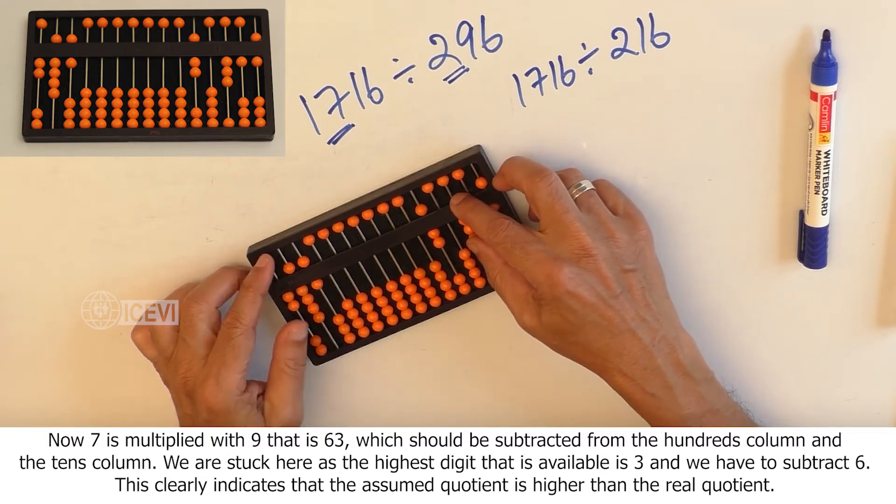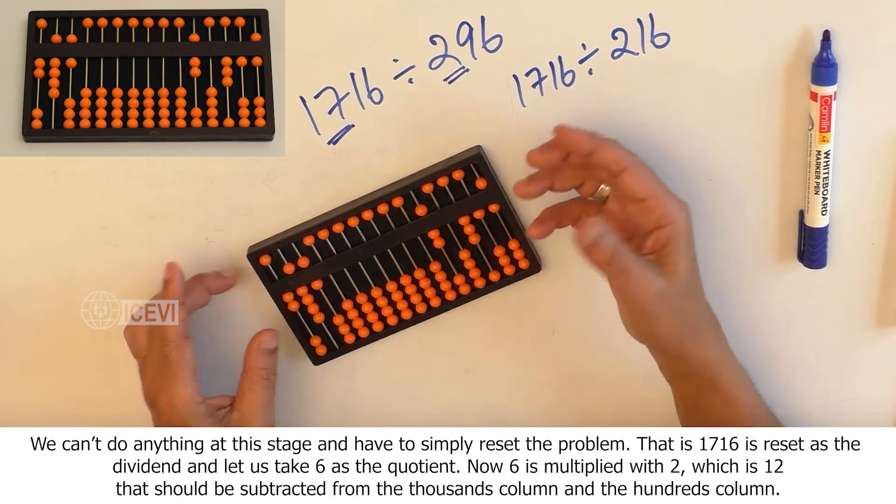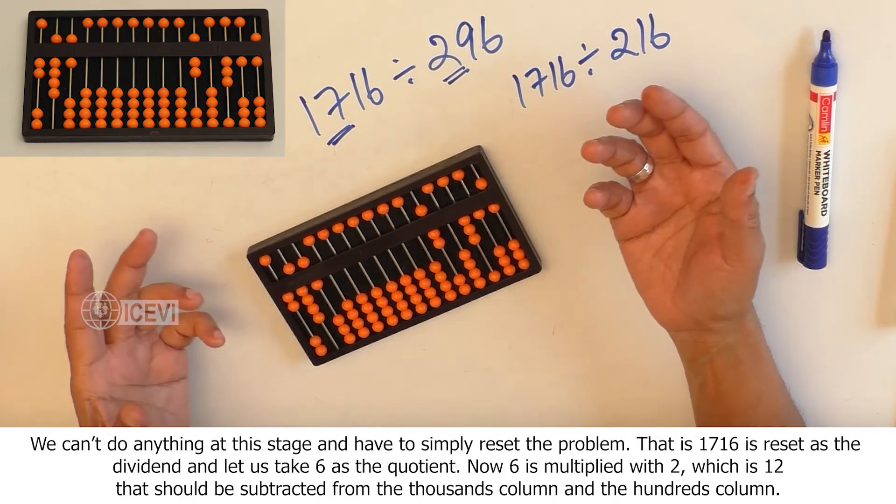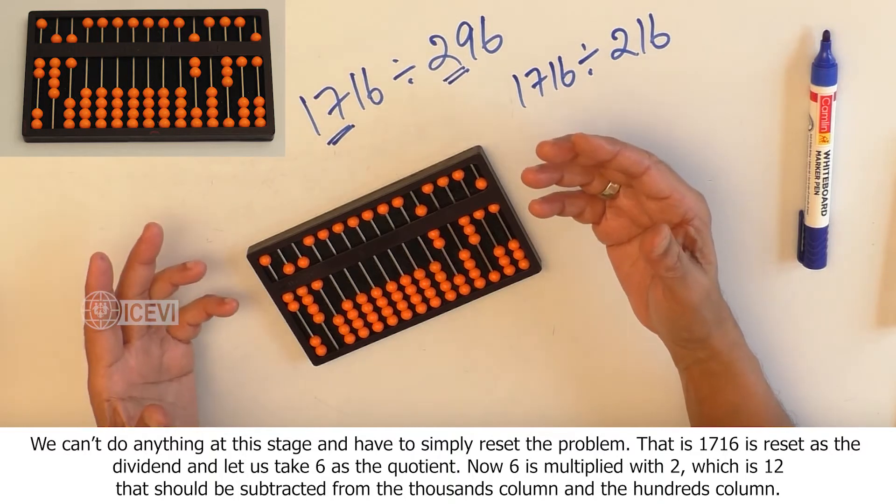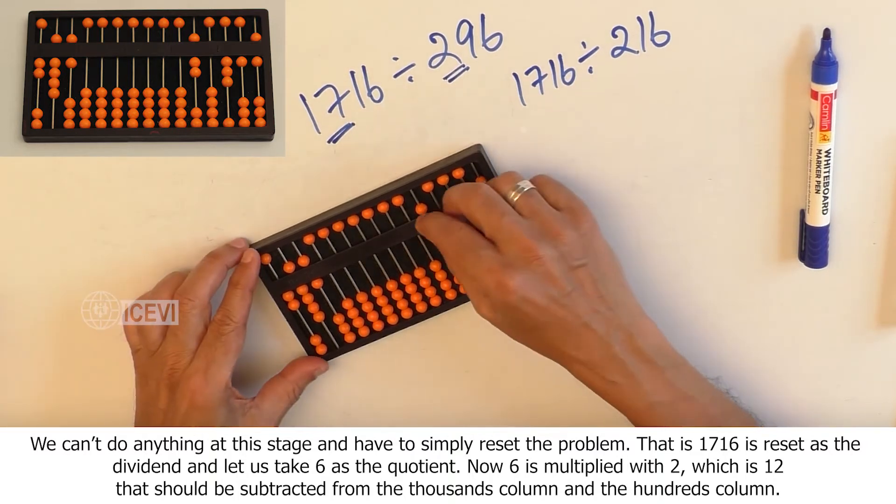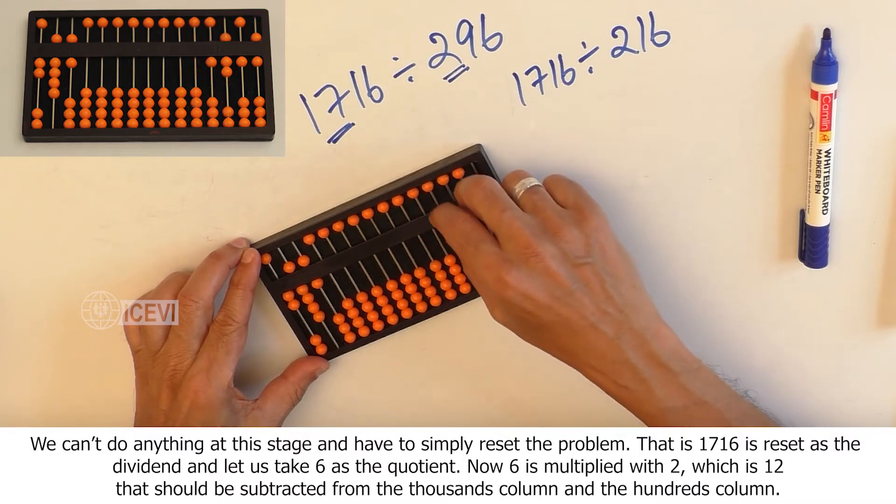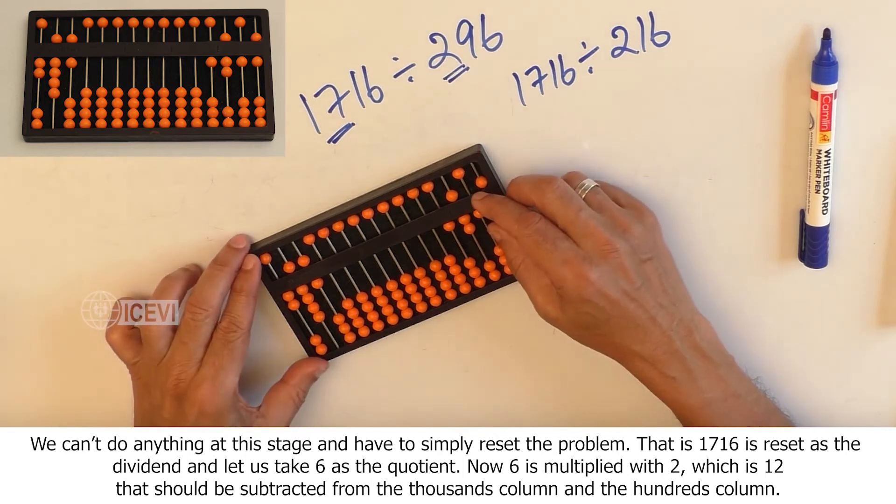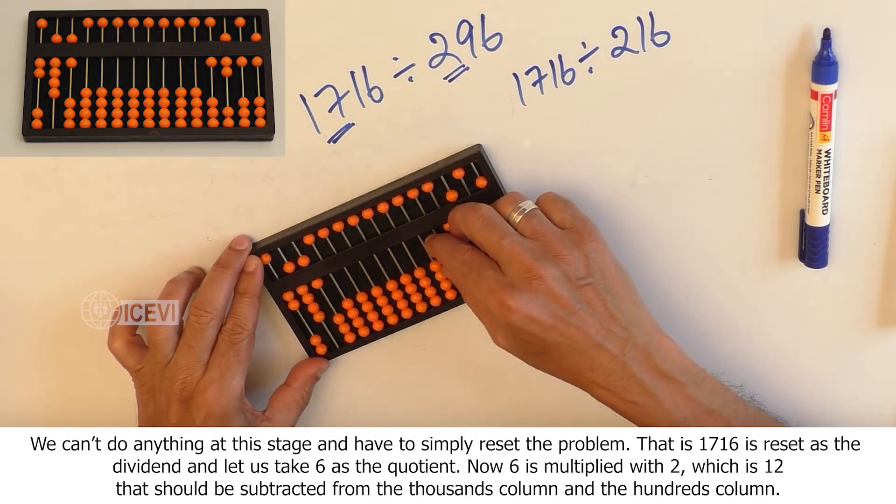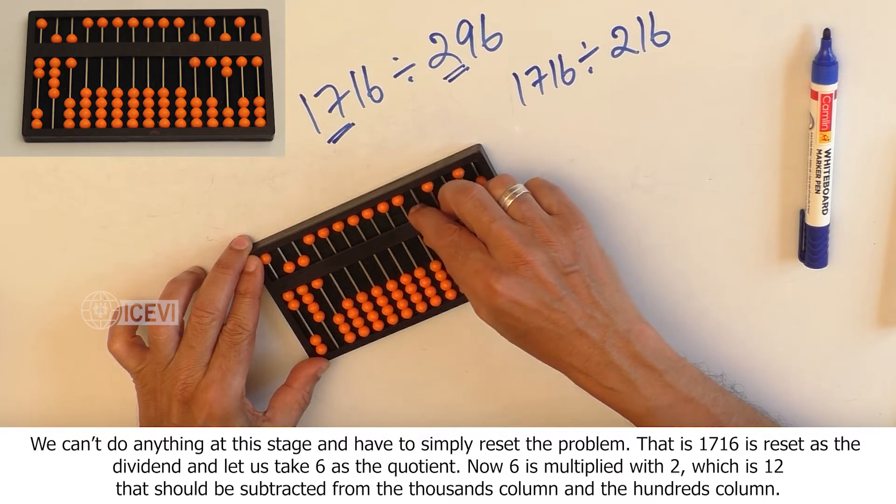This clearly indicates that the assumed quotient is higher than the real quotient. We can't do anything at this stage and have to simply reset the problem. That is, 1716 is reset as the dividend, and let us take 6 as the assumed quotient.